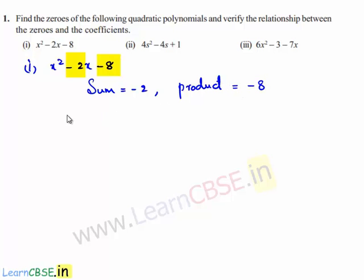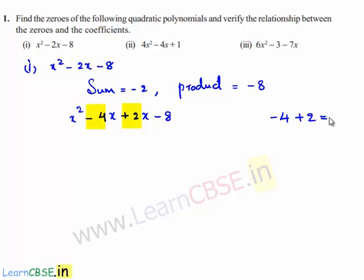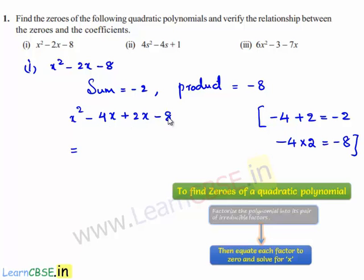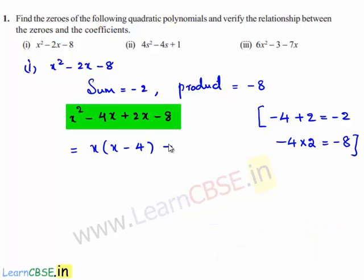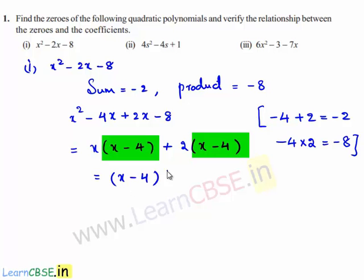By the method of splitting, we can write the given quadratic polynomial as x² - 4x + 2x - 8, so that -4 plus 2 gives a sum of -2 and the product of -4 and 2 is -8. So -4 and 2 satisfy the two conditions. Taking x as common, we get x(x - 4) + 2(x - 4), which is (x - 4)(x + 2).